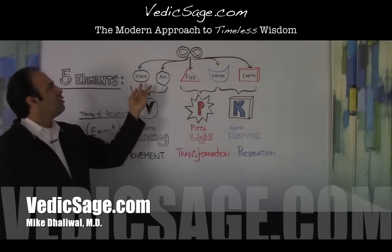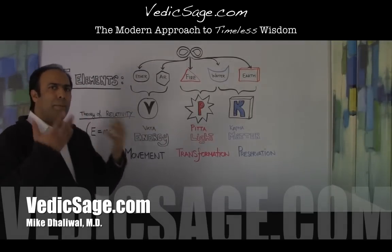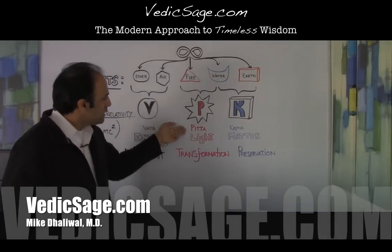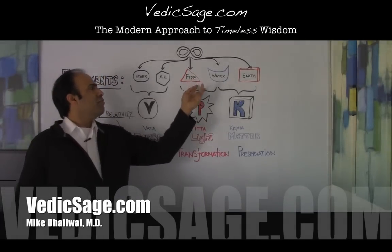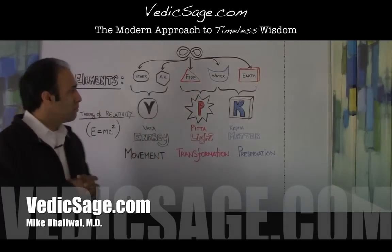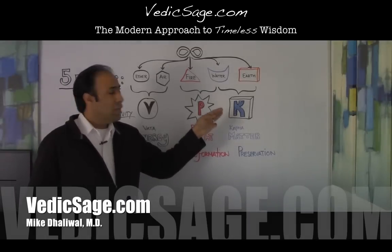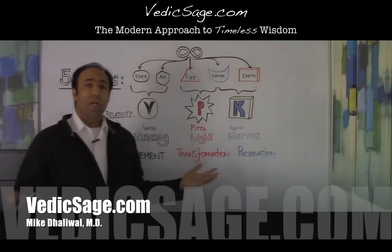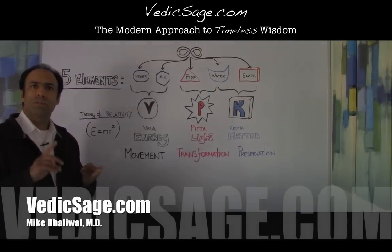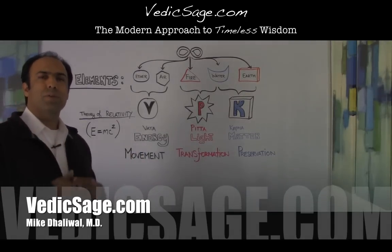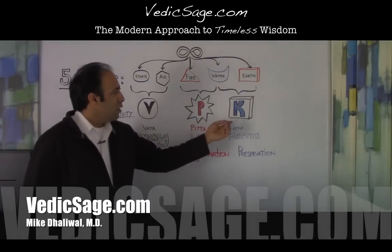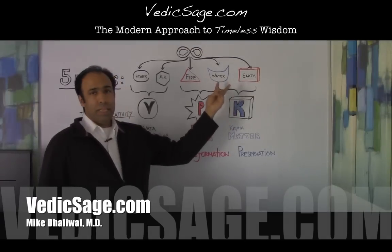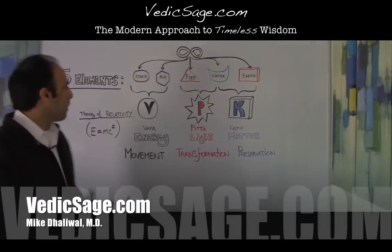the expression of ether and air predominant elements. Hot, sharp, light, liquid, mobile, oily qualities of pitta are the expression of the fire and water elements. Kapha is the organizing principle of water and earth and gives the qualities of heavy, dull, slow, liquid, oily characteristics and qualities that belong to kapha dosha, expressing primarily water and earth elements.